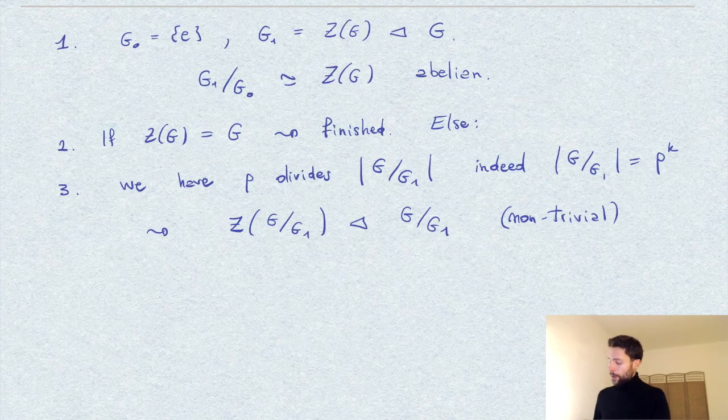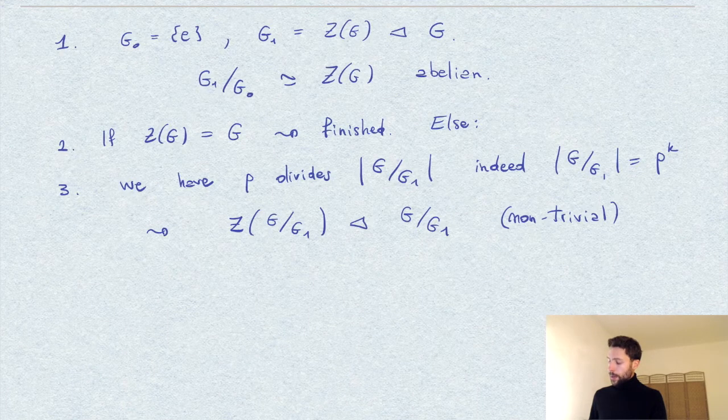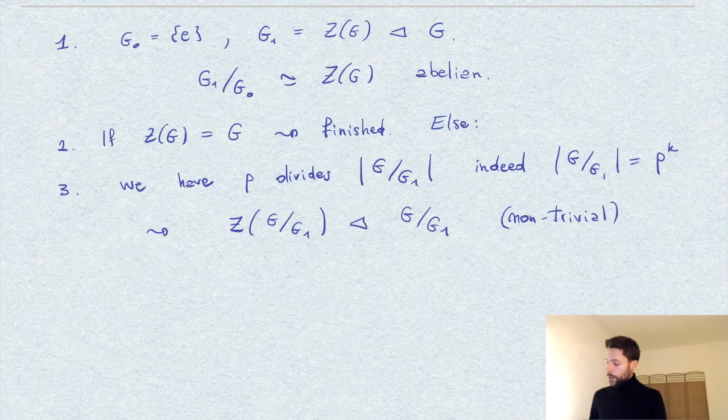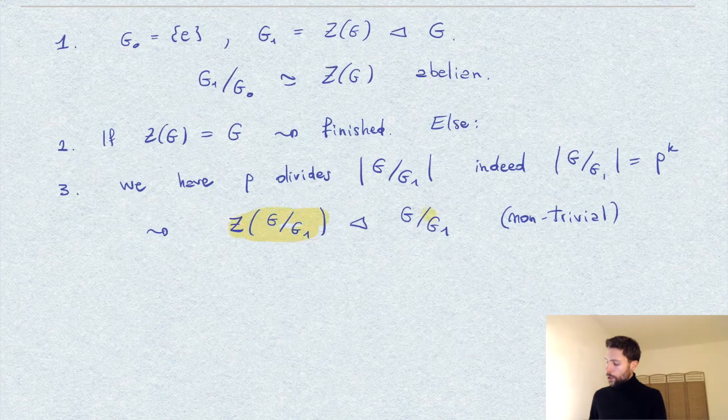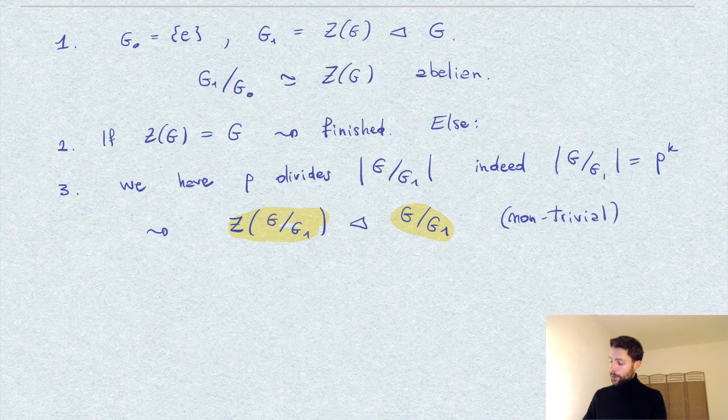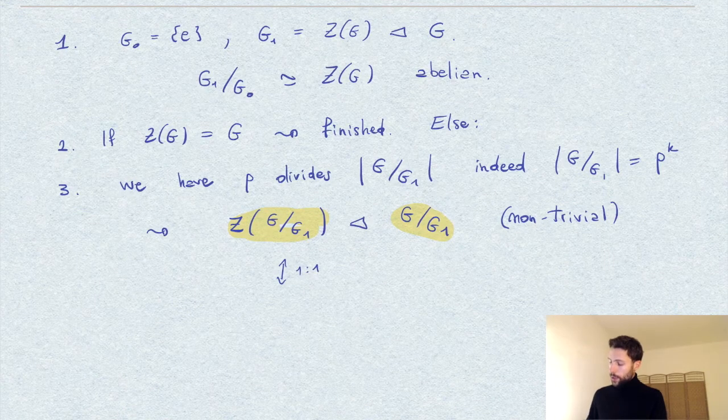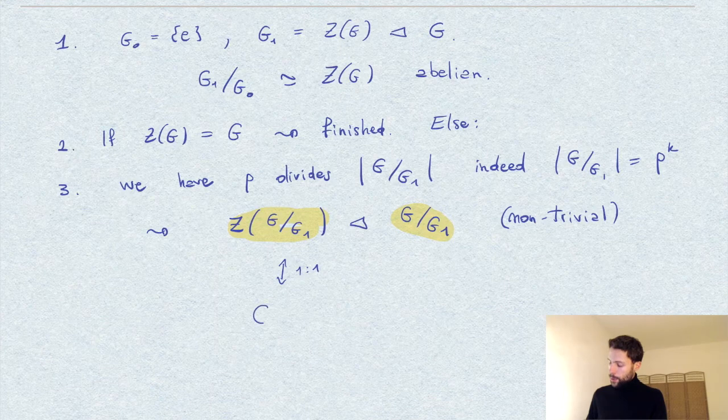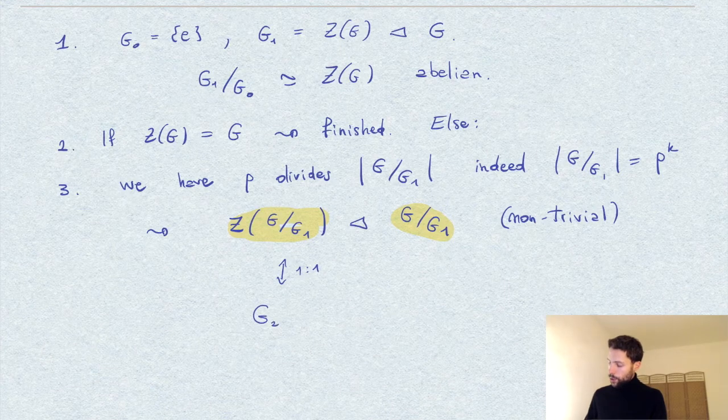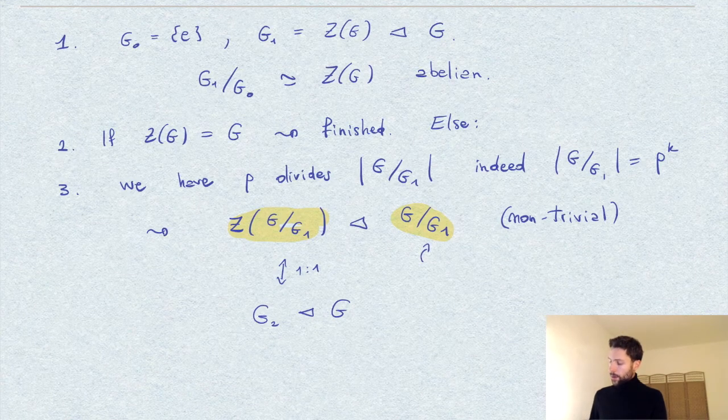Now, if you remember, in the video on the third isomorphism theorem, we also established the correspondence between normal subgroups of the quotient. These are in one-to-one correspondence with subgroups—I will call this G_2—of G which contain the subgroup G_1.